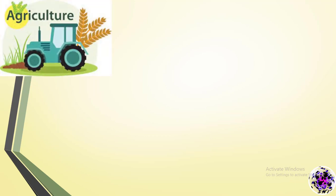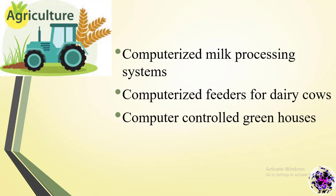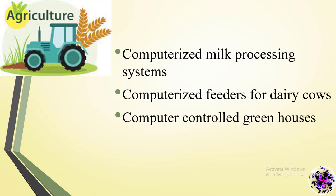Agriculture. Computerized milk processing systems, computerized feeders for dairy cows, and computer-controlled greenhouses.